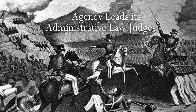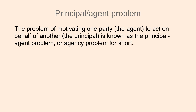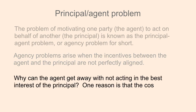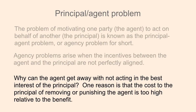Assume that the board is in a role somewhat like that of the commander of a small army but with few of the usual powers a commander has over troops. The for-cause protection the NLRB's ALJs have customarily enjoyed gives them a degree of independence. The NLRB has no summary power to remove or discipline its ALJs; a separate federal agency, the Merit Systems Protection Board, adjudicates issues pertaining to ALJ performance. This creates a principal-agent problem: agency problems arise when the incentives between the agent and the principal are not perfectly aligned, and the cost of removing or punishing the agent is too high relative to the benefit.